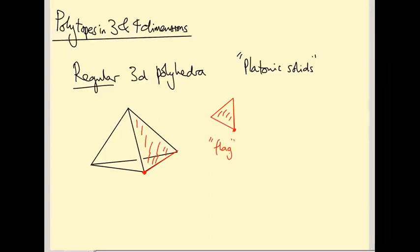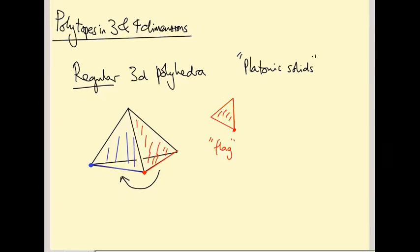Regular means there are enough symmetries that any two flags I pick inside this polyhedron are related by a symmetry. Here's another flag: I pick this vertex, this edge, and this face. To get from the red one to the blue one, I just have to rotate by 120 degrees. It turns out any two flags are related by some combination of rotations and reflections for this tetrahedron — so that means the tetrahedron is regular.